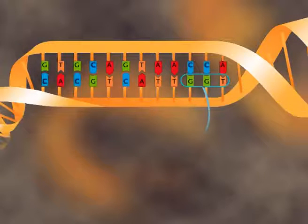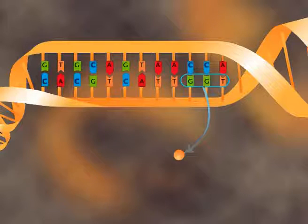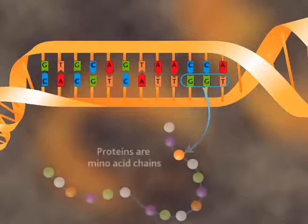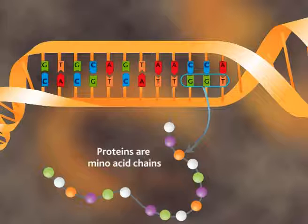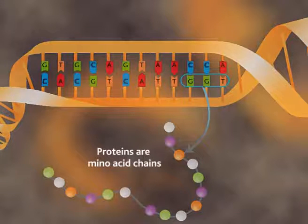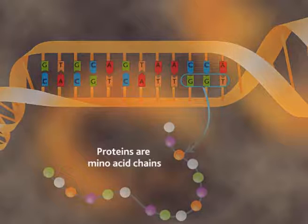These bases combine to form an amino acid. Proteins are all amino acid chains. The DNA sequences contain genetic information, which are referred to as genes, and which carry the manufacturing drawing for all the proteins of a cell.